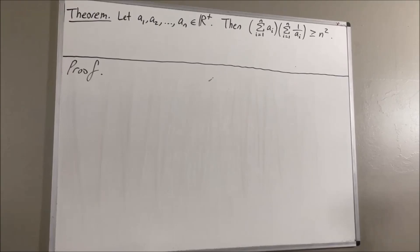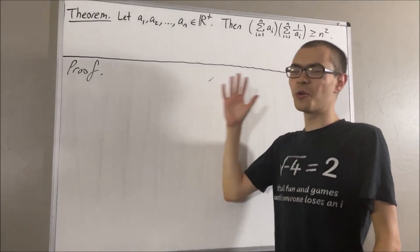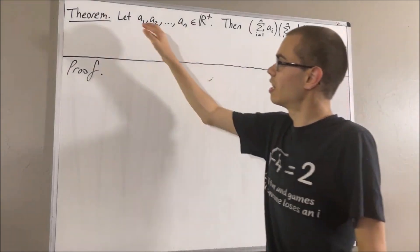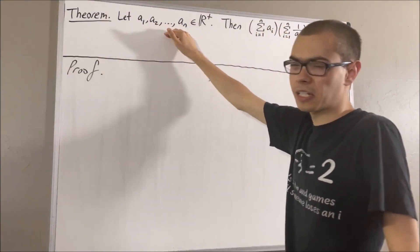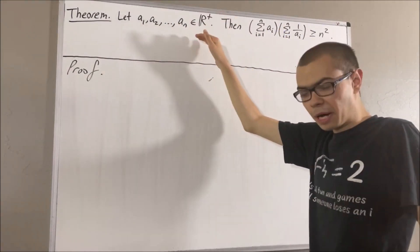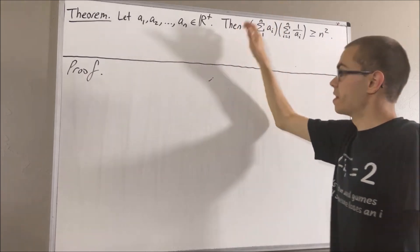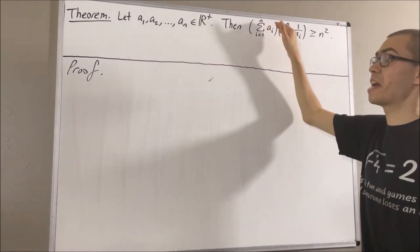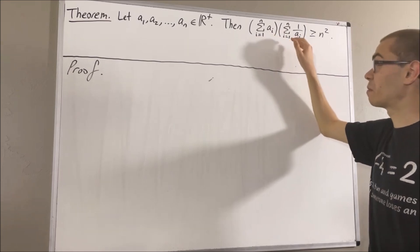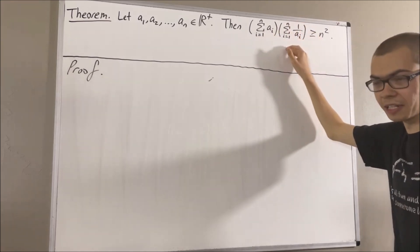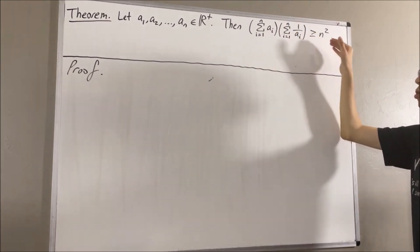Hello! In this video, we are going to prove the following theorem. Let a1, a2, ..., an be a list of positive real numbers. Then, the sum from i equals 1 to n of ai times the sum from i equals 1 to n of 1 over ai is greater than or equal to n squared.